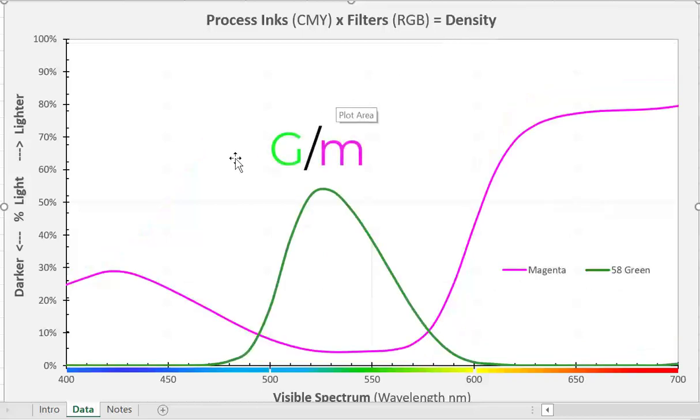Here is the magenta-green. Again, magenta transmits or reflects blue light and red light. It absorbs the green light. So we want to have a filter that allows light to pass where the ink is absorbing. So this is a Kodak Rattan number 58 filter.